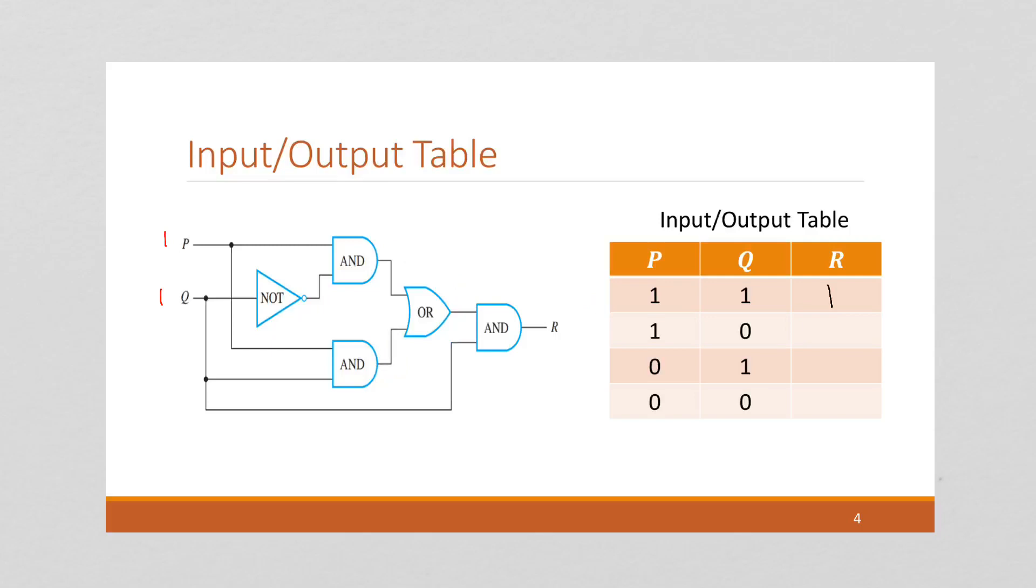I'm going to erase all this and do it for the next line. 1, 0. One, a 1. A 0, a 1. This is a 0, so this is a 0.